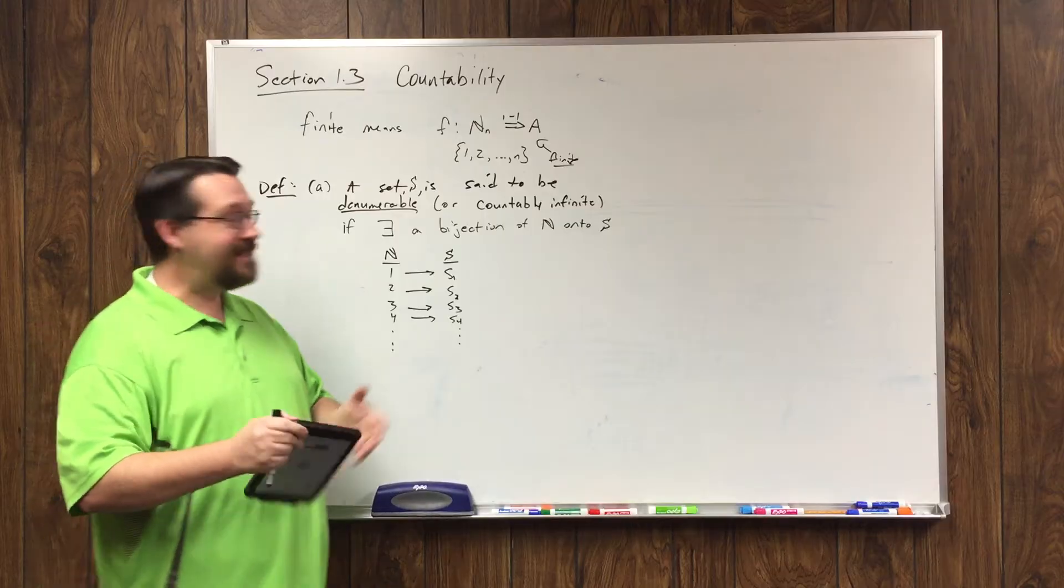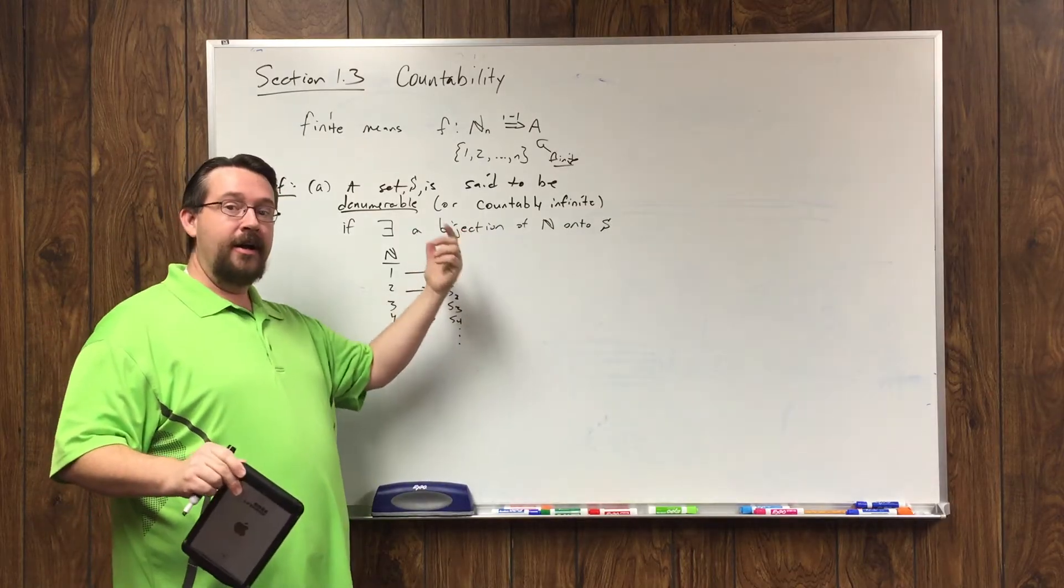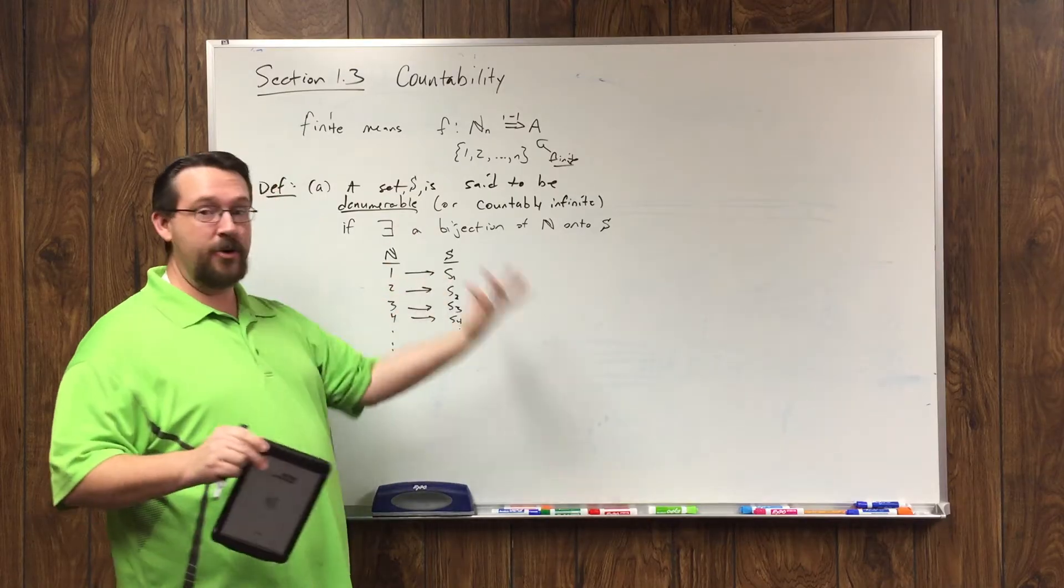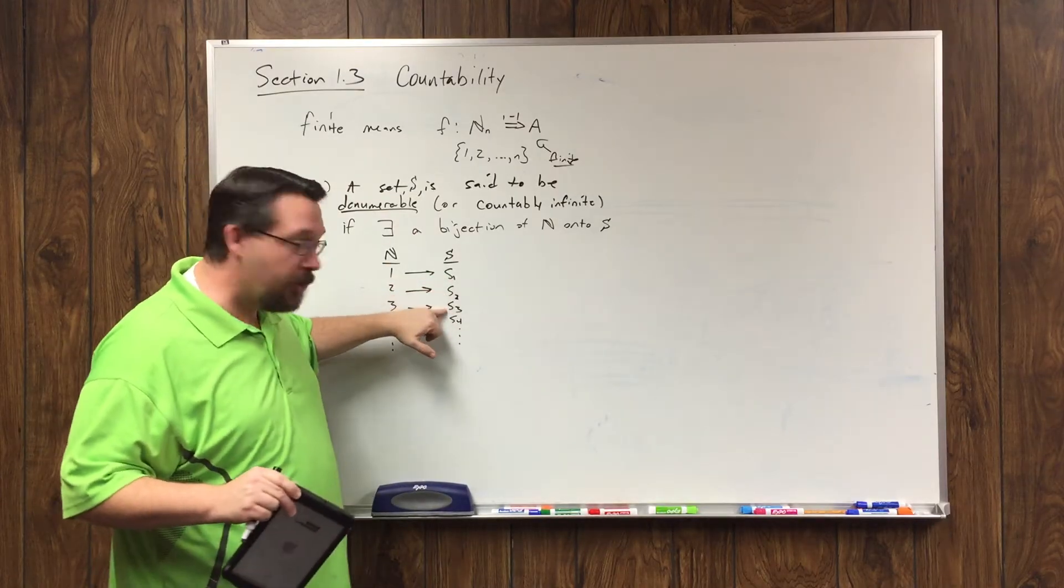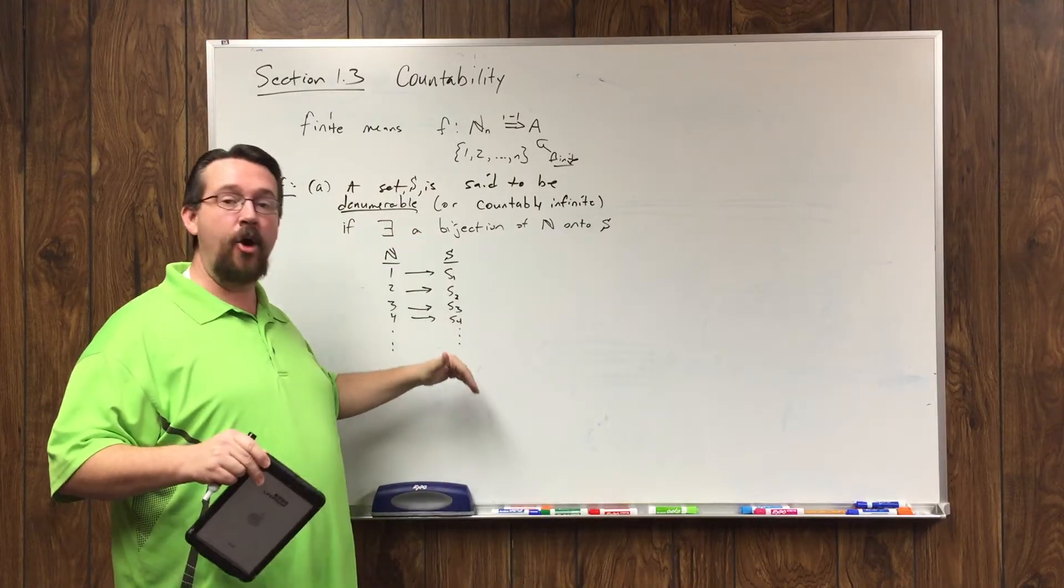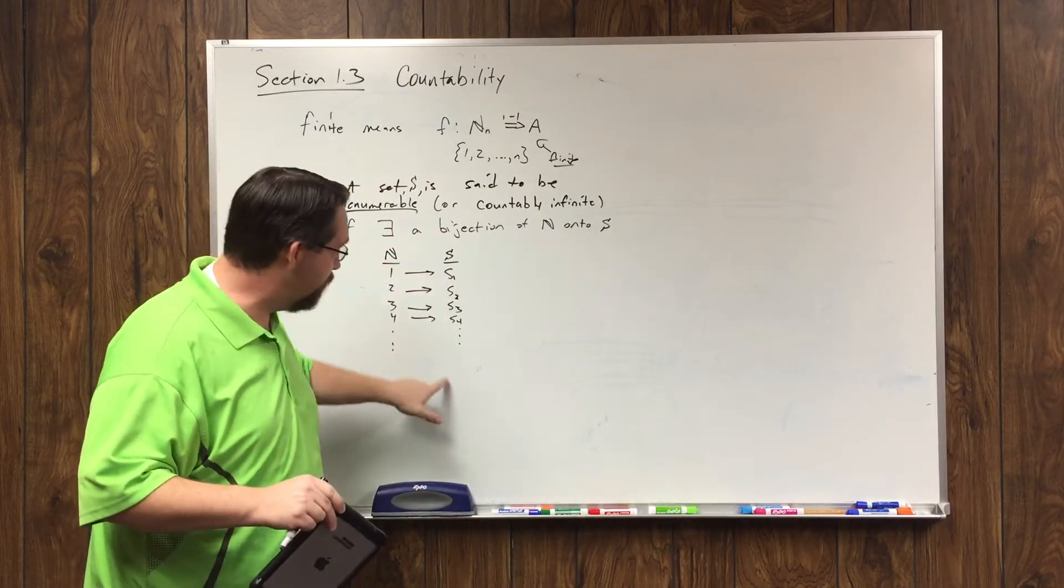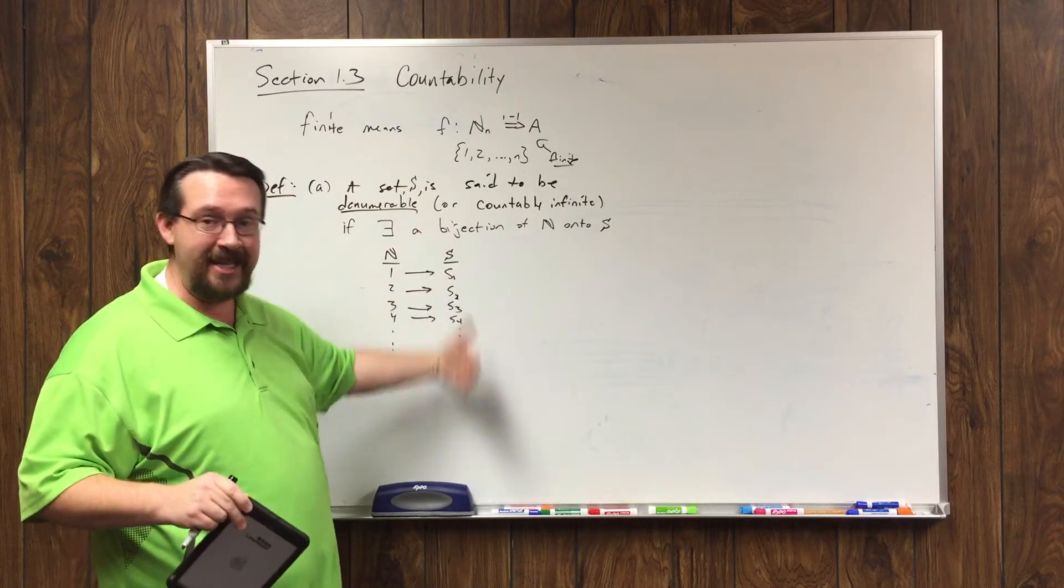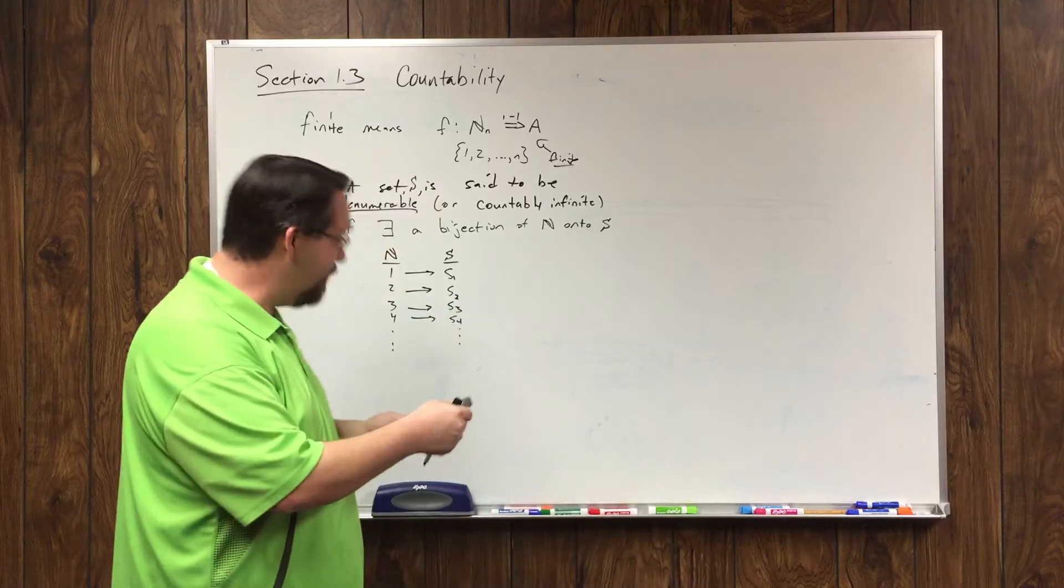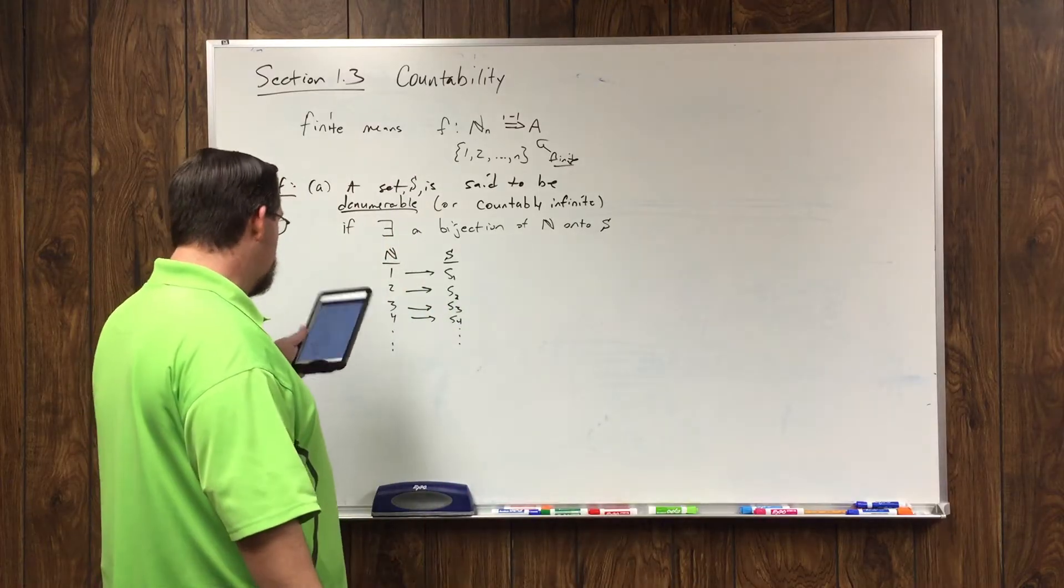This denumerable gets its name from the fact that you are enumerating the set. That is, you're assigning one element to be the first element, the second element, third element, fourth element, and so on. So, you can essentially list out all of the elements, and as long as you continue in this pattern, dot, dot, dot means continue on in the same way. Then you'll cover the entire set. You'll have every element of the set in there. That's what it means to be denumerable.